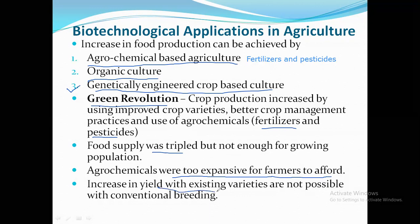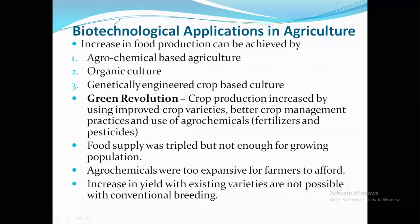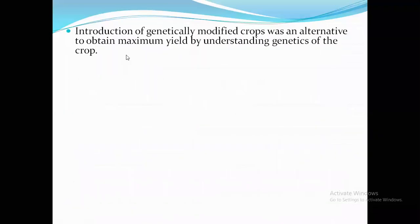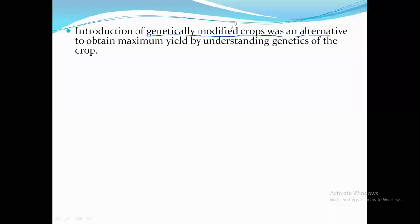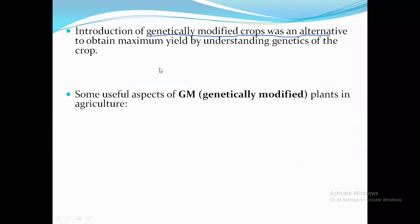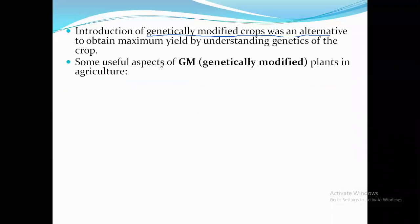Increasing yield with existing varieties is not possible with conventional methods, because their limitations mean productivity will not increase. Introduction of genetically modified crops was the only alternative. There are not only genetically modified crops but also other genetically modified organisms, called GMOs. More successful were the genetically modified plants for agriculture.